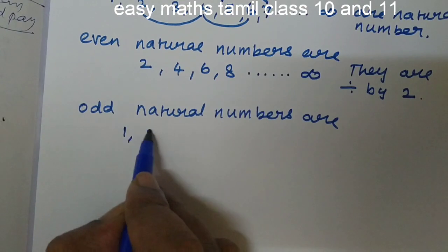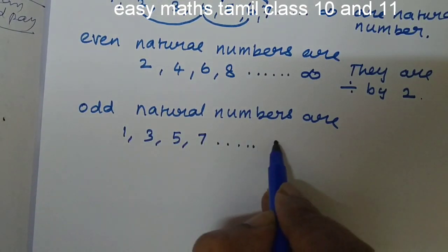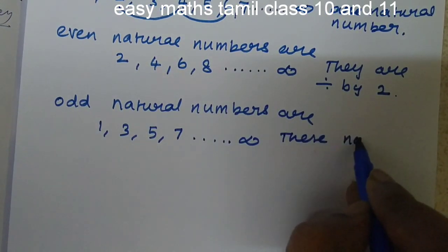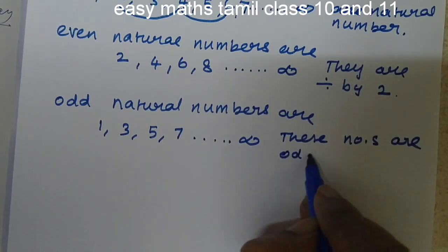1, 3, 5, 7. These numbers are odd natural numbers.